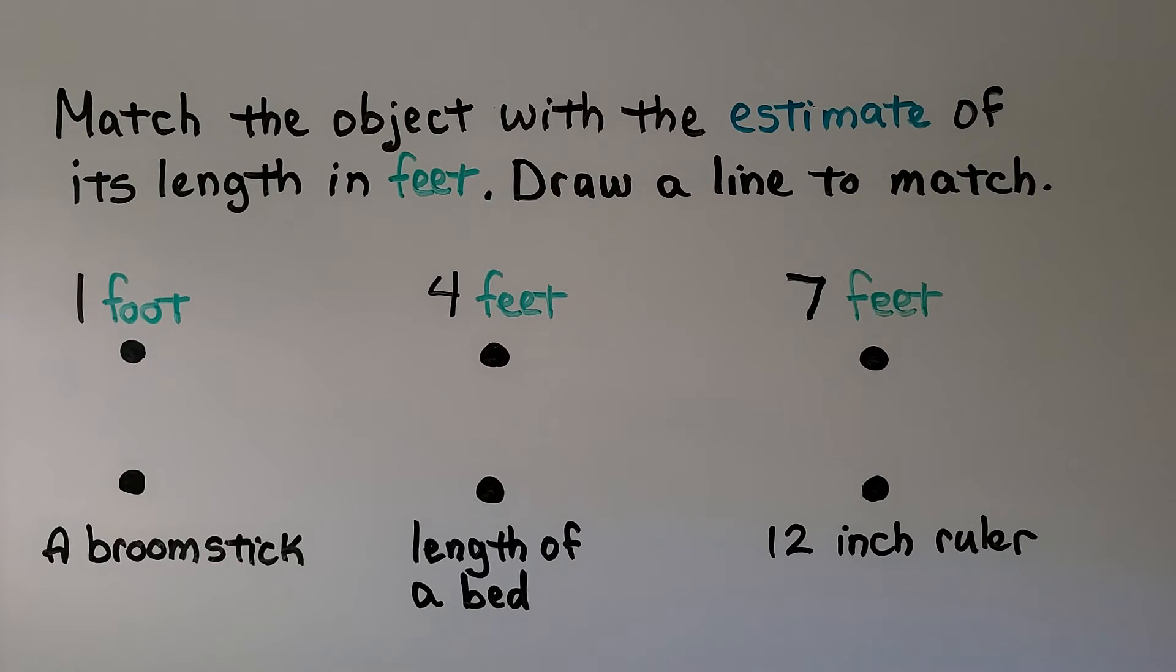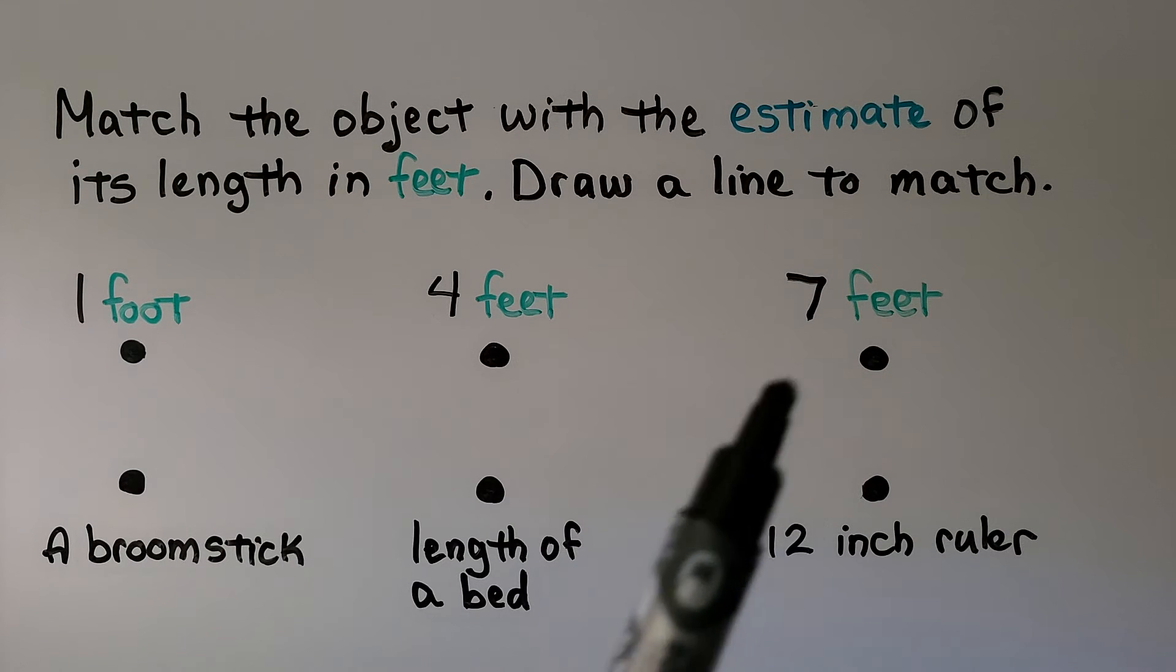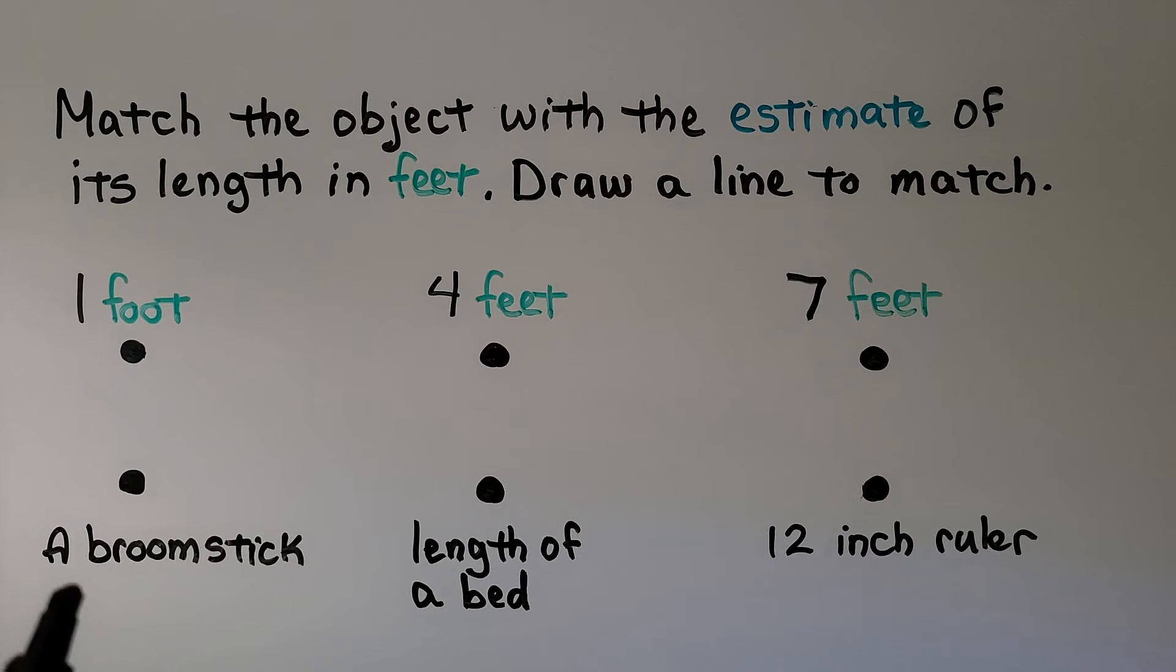Here we need to match the object with the estimate of its length in feet and draw a line to match. So we have 1 foot, 4 feet, 7 feet, and our choices are a broomstick, the length of a bed, a 12-inch ruler. So out of these three, which one do you think is 1 foot?